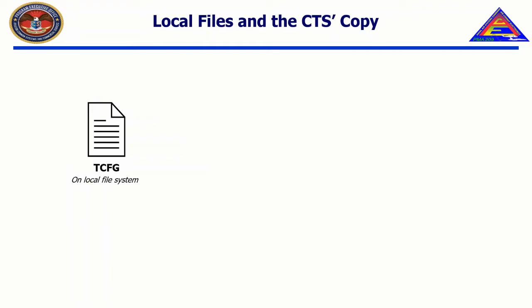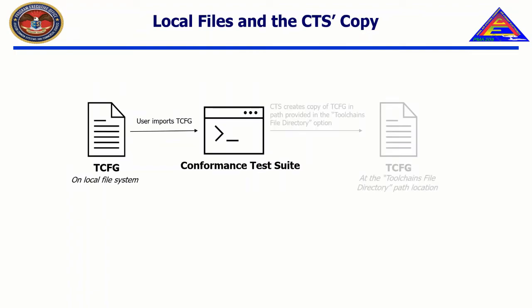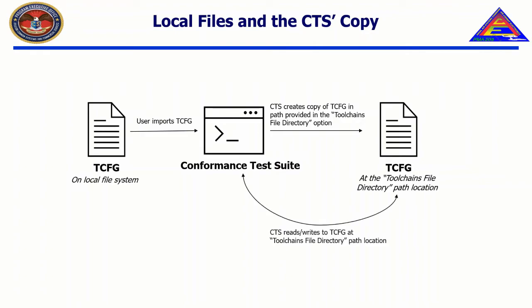When a toolchain is imported, the CTS reads the toolchain and saves a copy in the aforementioned toolchain files directory. This is important to note, especially if changes are made to the originally read toolchain configuration file in, say, a text editor. Because the CTS has made a copy of the original file, those changes will not be reflected in the CTS. The importation of a project configuration file, as we will see, abides by the same principle.